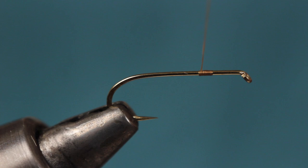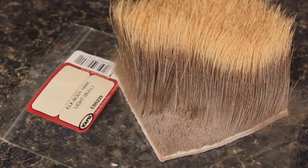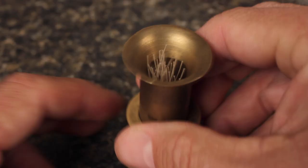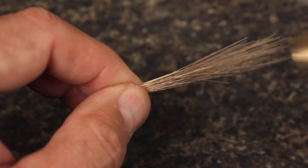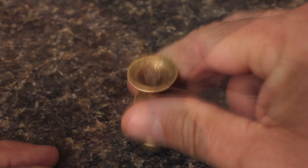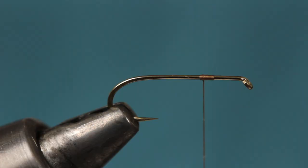Elk body hair, here light bull, is used to form the tail and underbody of the fly. A quarter pencil diameter clump is plenty. Elk is loaded with shorter fibers and fuzzies and it's important to strip as much of these out as you can. A wide mouth stacker makes it real easy to roughly align the hair tips. You can then snip the butt ends off square and use a smaller stacker to concentrate the clump and accurately align the tips.